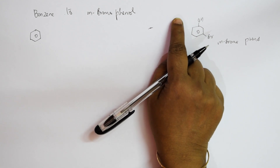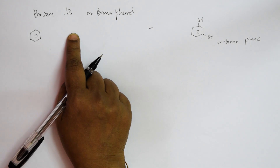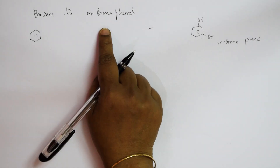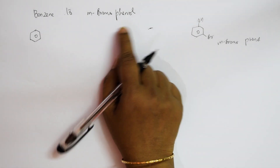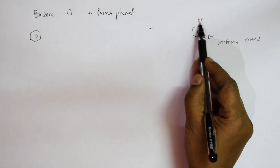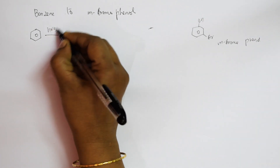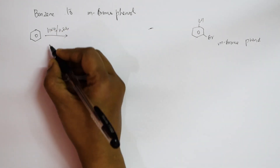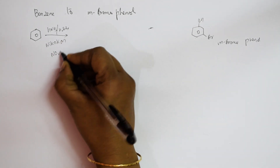To get the Cl group, first do nitration — that is the easiest way. From nitration you convert to amines, and from amines you can introduce your Cl or Br group. So first do nitration using HNO3 and H2SO4 — this introduces NO2 to the ring.